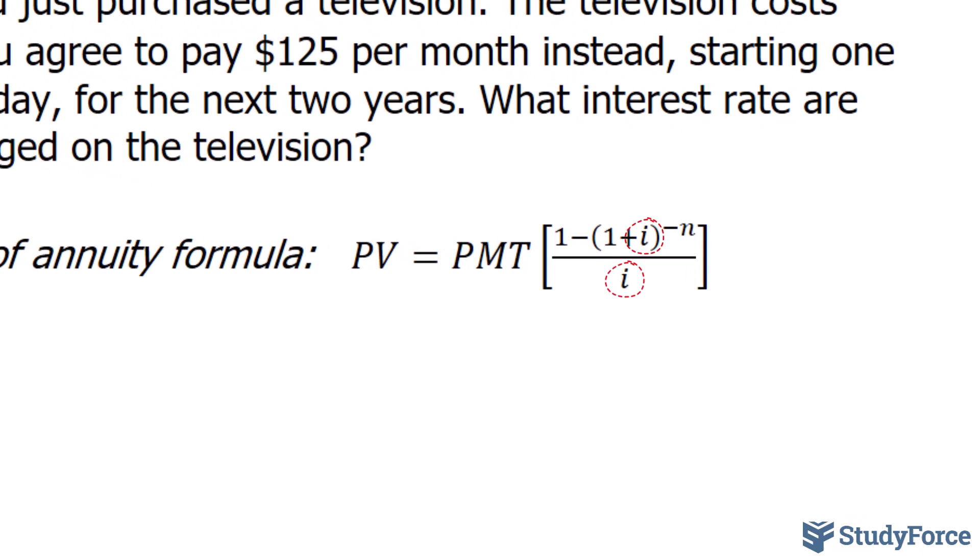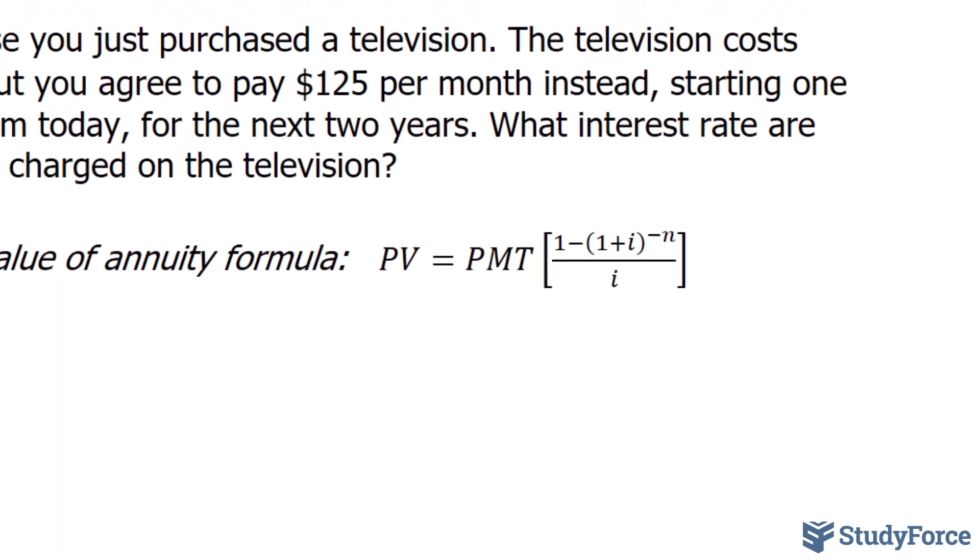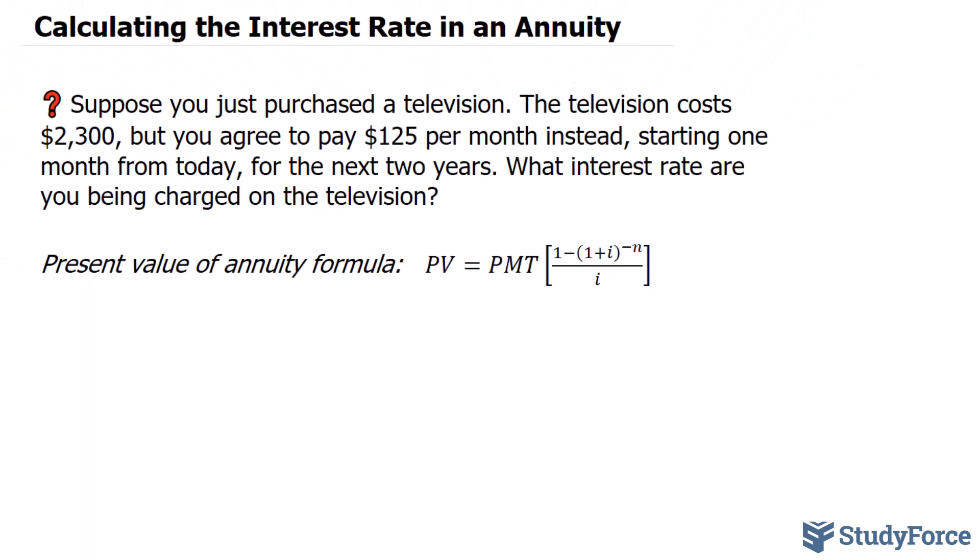To show you what I mean, let's go ahead and substitute the values in. The television today costs $2,300, so in for PV will be $2,300. In for PMT, which is the payments per period, we have $125.